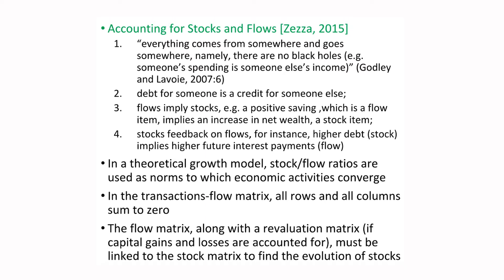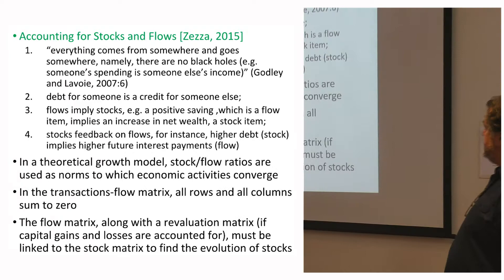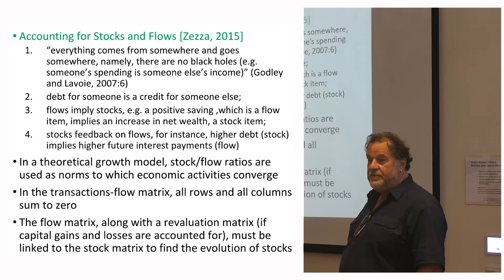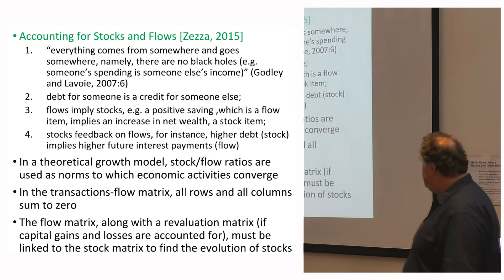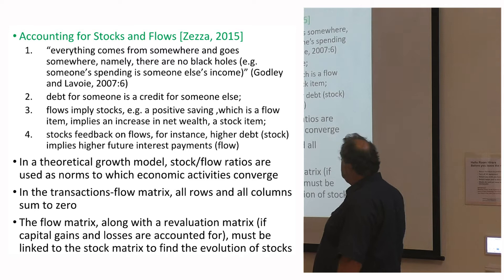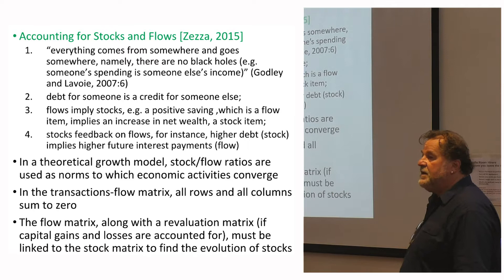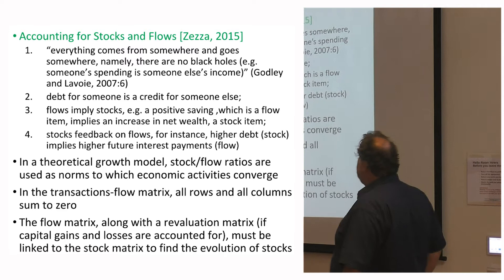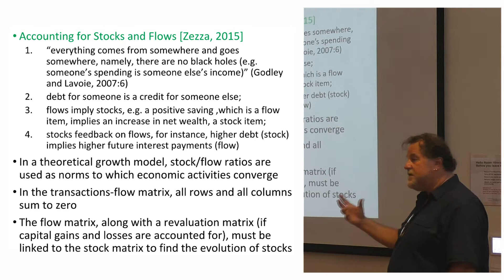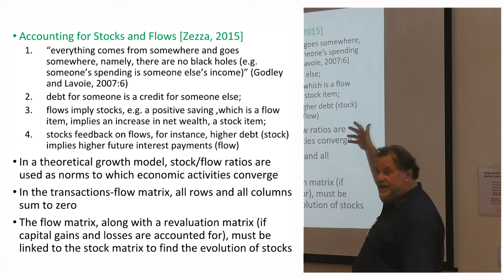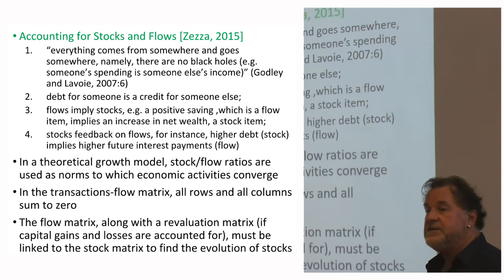How do you account for stocks and flows? The civil rule is that everything comes from somewhere and goes somewhere — there are no black holes. Someone's spending has to be someone else's income, and debt for someone must be a credit for someone else. Flows accumulate as stocks: positive saving implies an increase in net wealth. But stocks also feed back on flows — higher debt levels imply higher future interest payments. You can also impose stock-flow norms in long-term modelling.